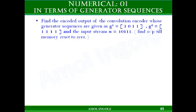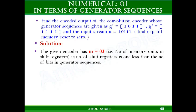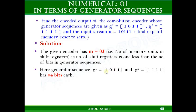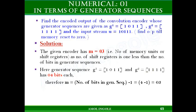From the statement you can identify several things. The given encoder has 3 memory units. As explained, you can identify this from the length of the generator sequence. The length is 4 — there are 4 bits in G1 and 4 bits in G2. Therefore, the number of memory units M equals the number of bits in the generator sequence minus 1, which gives 4 - 1 = 3 memory units.